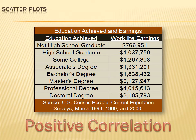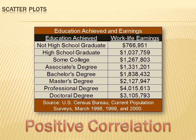In this chart, we're showing different levels of education achieved and the corresponding work-life earnings that individual could expect. For instance, an individual who was not a high school graduate could expect lifetime earnings of $767,000, but someone with a bachelor's degree could expect $1.838 million, and someone with a professional degree like a law degree could expect over $4 million.